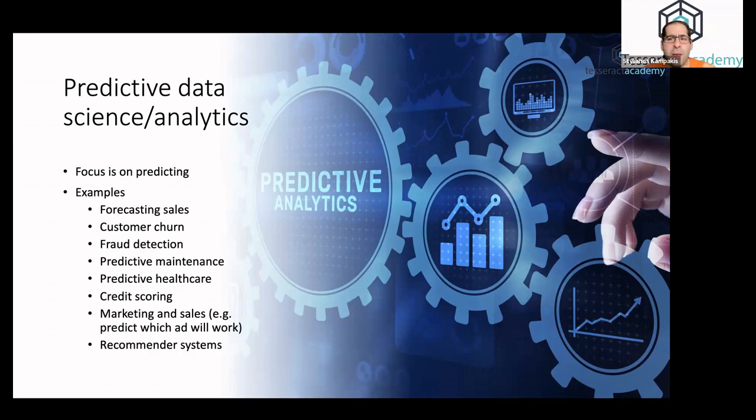Most of the applications of data science fall within this scope: things like forecasting, customer return prediction, fraud detection, predictive maintenance, healthcare. There are many companies now in the space of predictive healthcare; it's a space that is growing very rapidly. And things like credit scoring, recommender systems, etc.